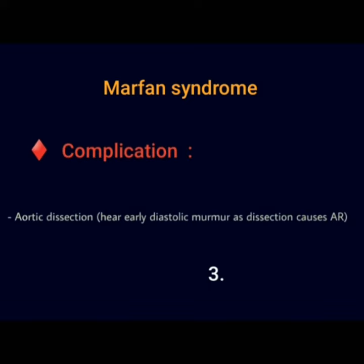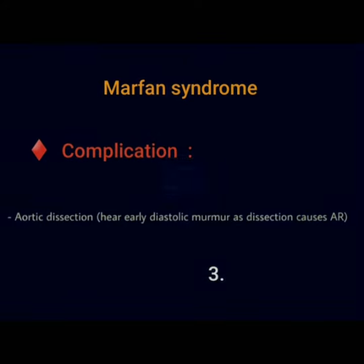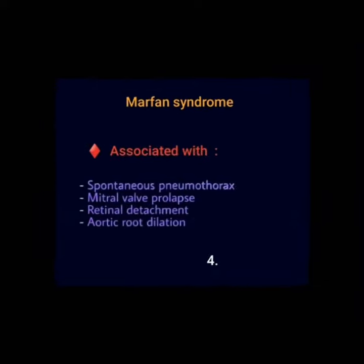A major complication of Marfan syndrome is aortic dissection, where early diastolic murmur as dissection causes aortic regurgitation. Marfan syndrome is also mainly associated with spontaneous pneumothorax, mitral valve prolapse, retinal detachment, and aortic root dilatation.